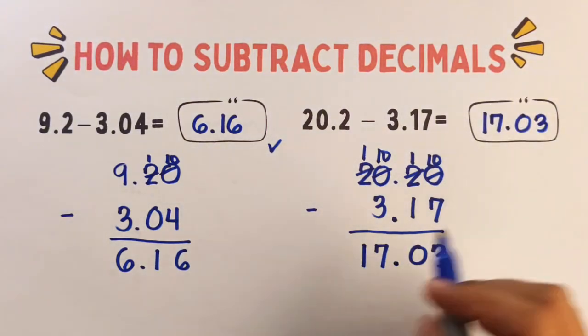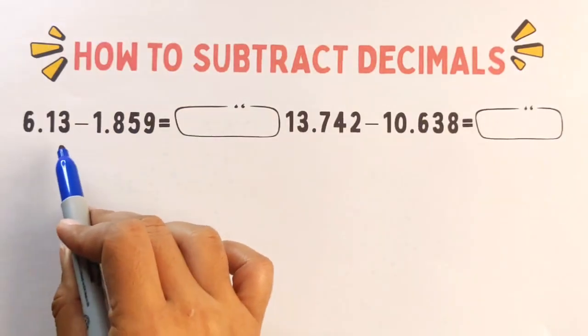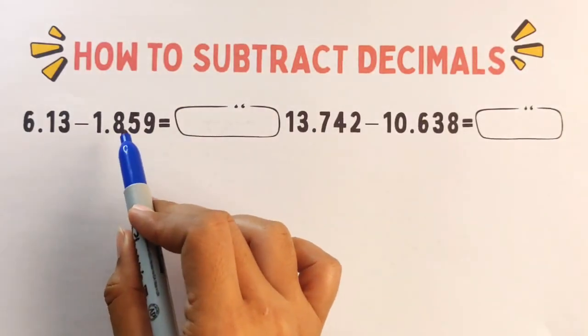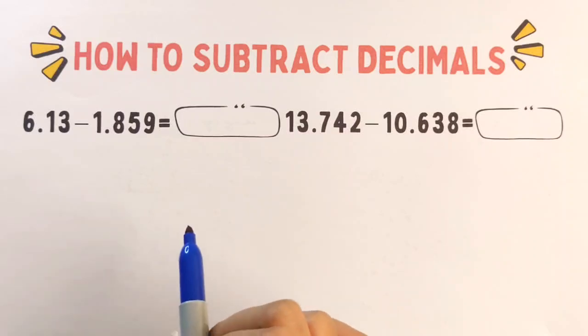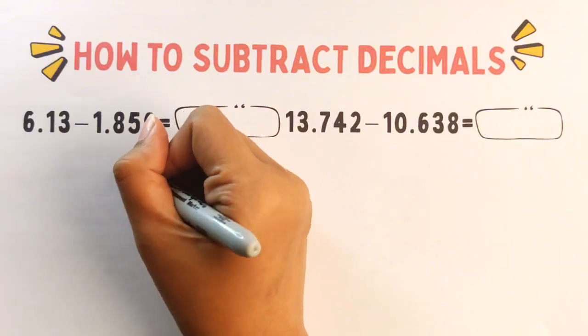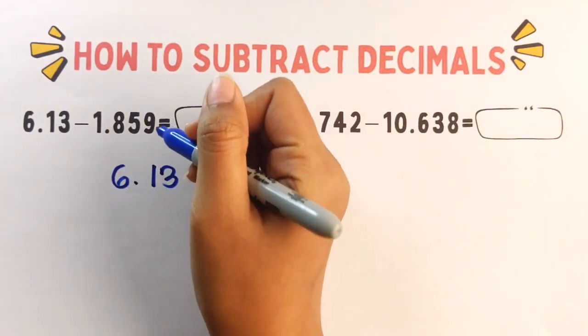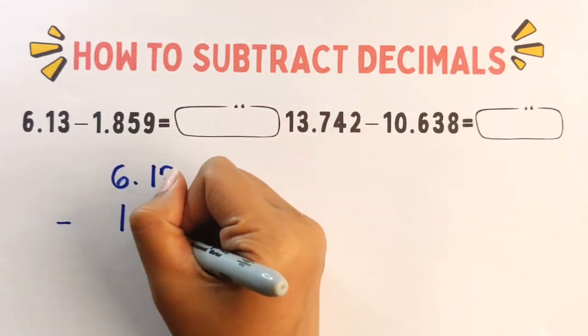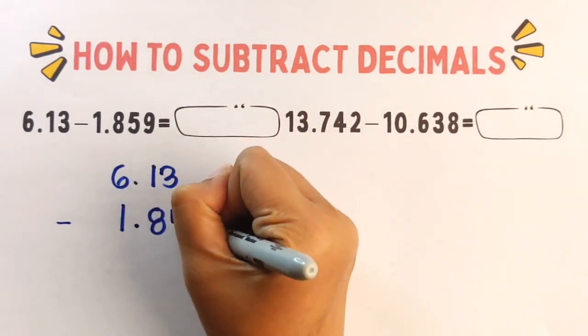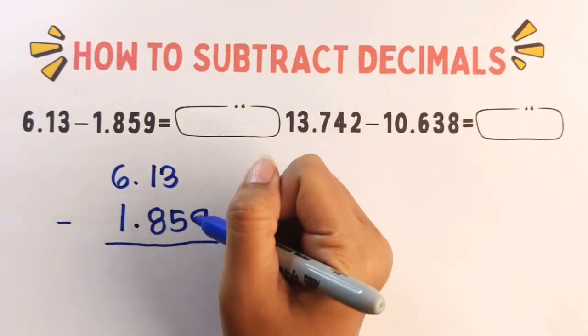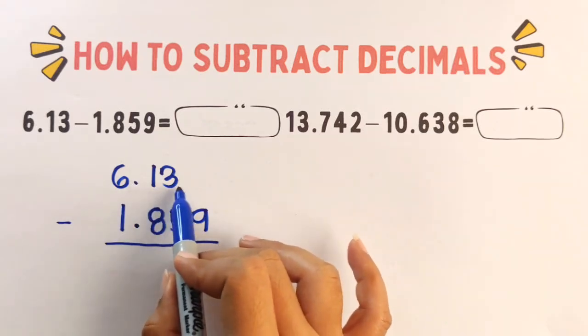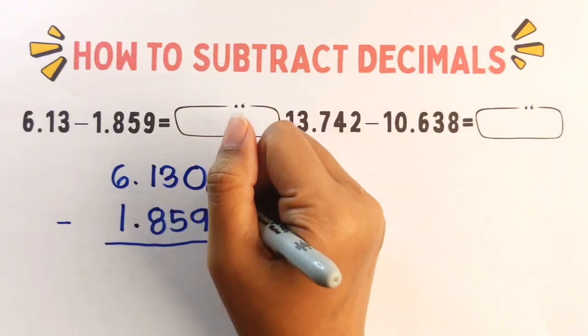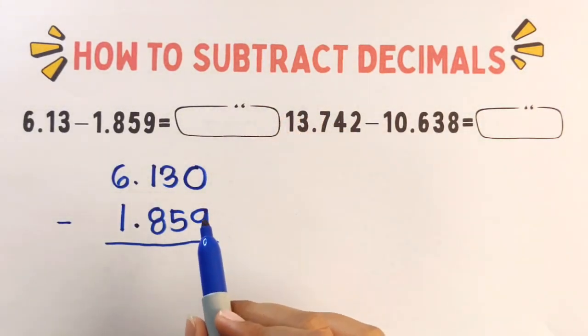Okay. And for the next example, we have 6.13 minus 1.859. And now, we need to follow the process. Step number one, line up the decimals. So 6.13 minus 1.859. And now, we need to add 0 here at the end of 3 to make it 6.130. So it must match the 3 decimal places.